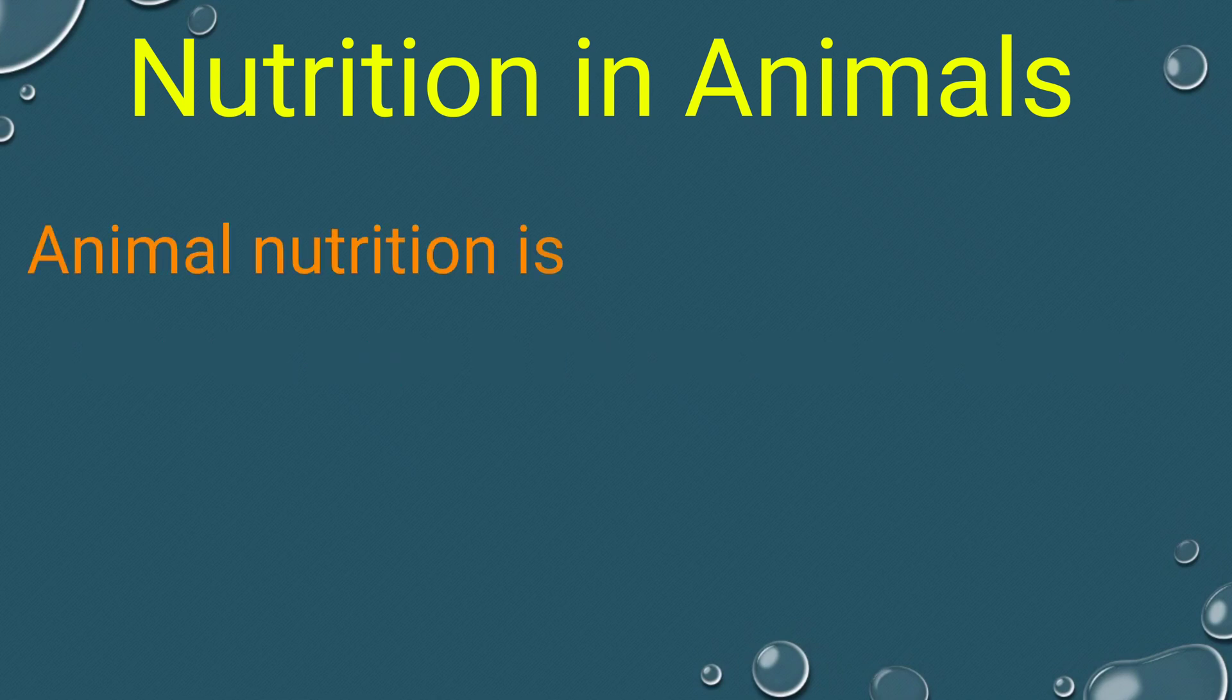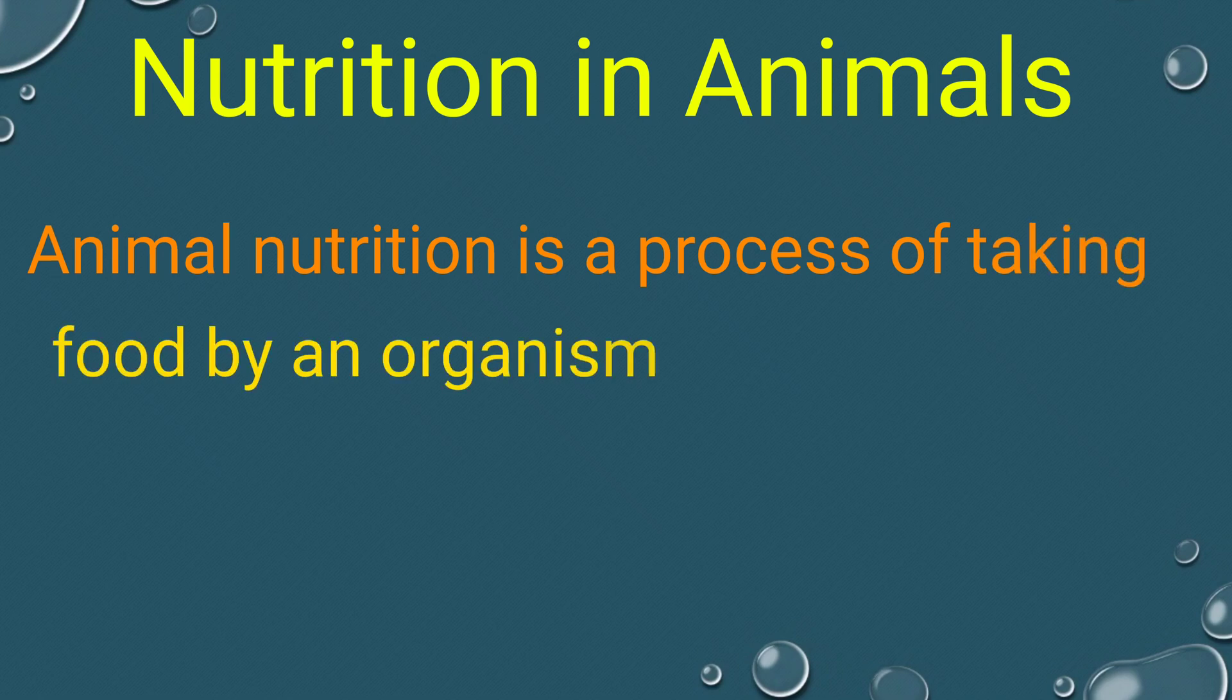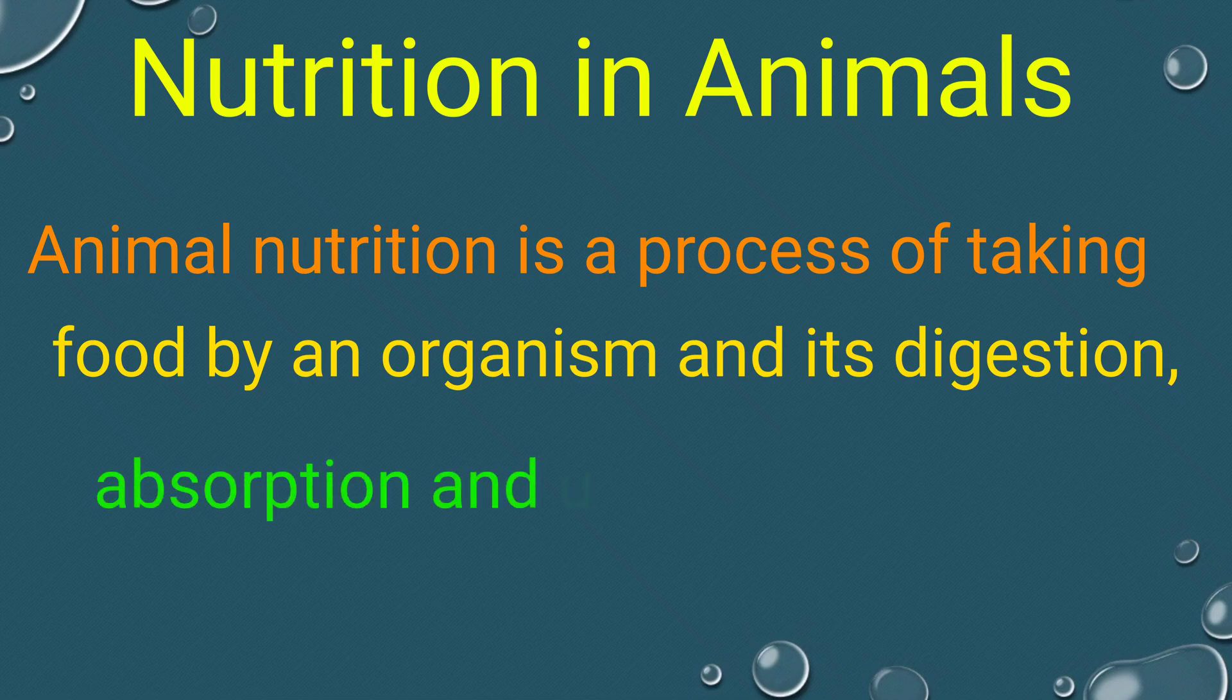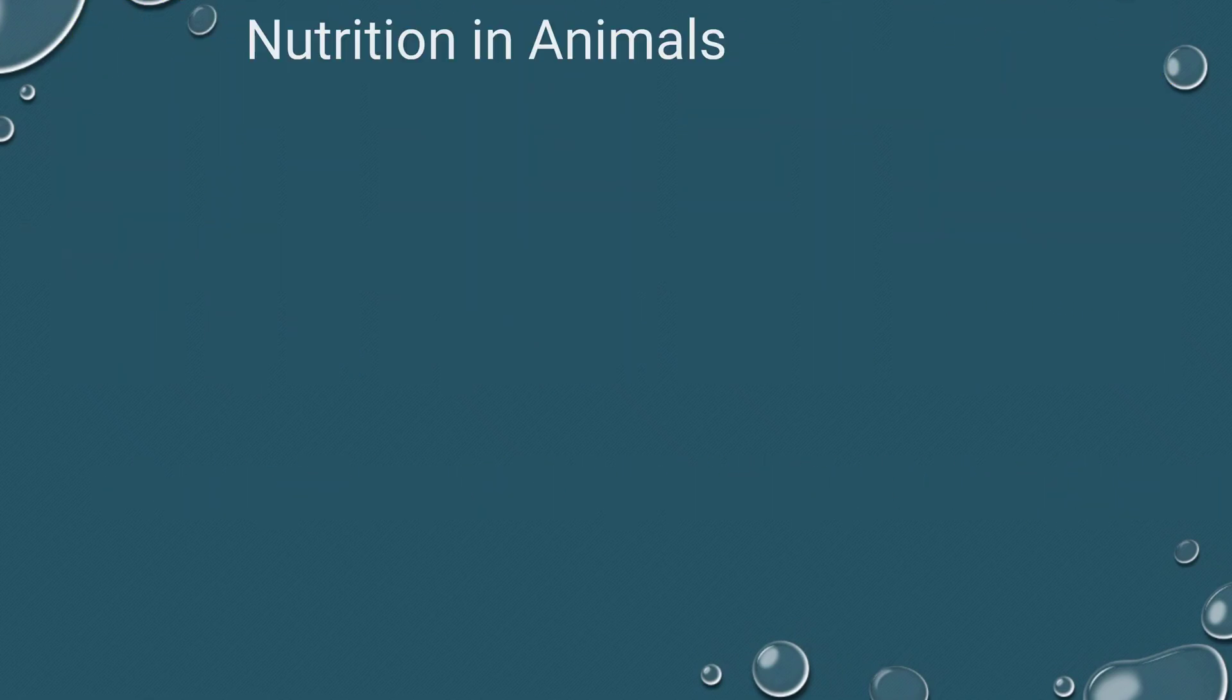Animal nutrition is a process of taking food by an organism and its digestion, absorption, and utilization in the body. Different steps in the process of nutrition.